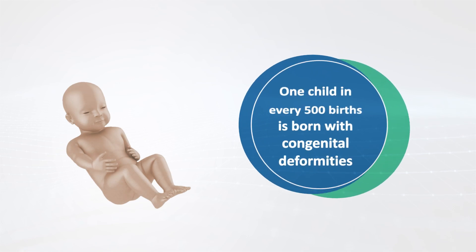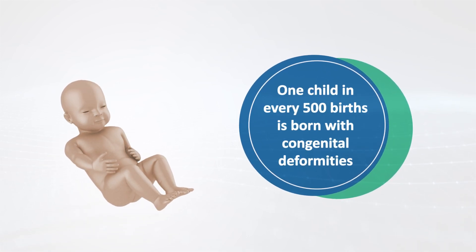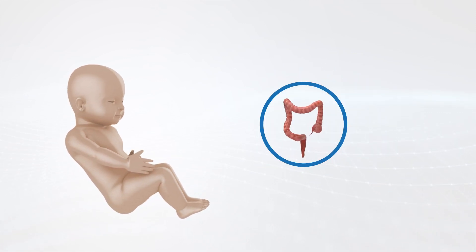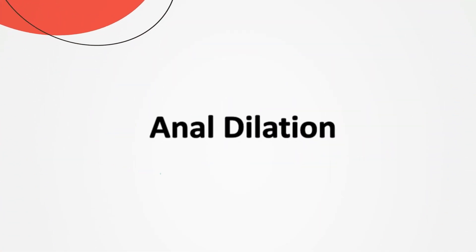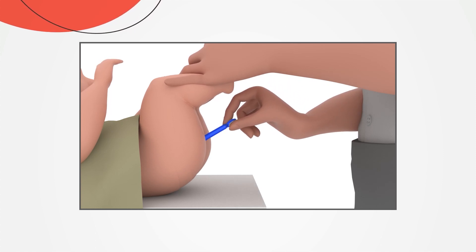In developing countries, one child in every 500 births is born with congenital deformities. One such condition is infants who are born with anorectal malformations. Post-surgery, the doctor may recommend anal dilation. Anal dilation is a simple and safe procedure that can be done at home. The procedure involves passing a dilator into your child's anal opening.